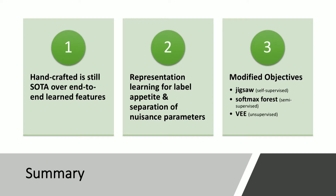The key takeaways: a confirmation that handcrafted features still represent the state of the art, and I hope that will change as we think about new ways to design architectures that will help our end-to-end deep learning systems learn representations better. I hope you'll take away the importance of learning representations that disentangle nuisance parameters from the representation you care about. I've shown you three toy problems that act as surrogates for unsupervised learning of features: the jigsaw puzzle, the SOPEX forest, and the variational equivalence encoder. Thank you.